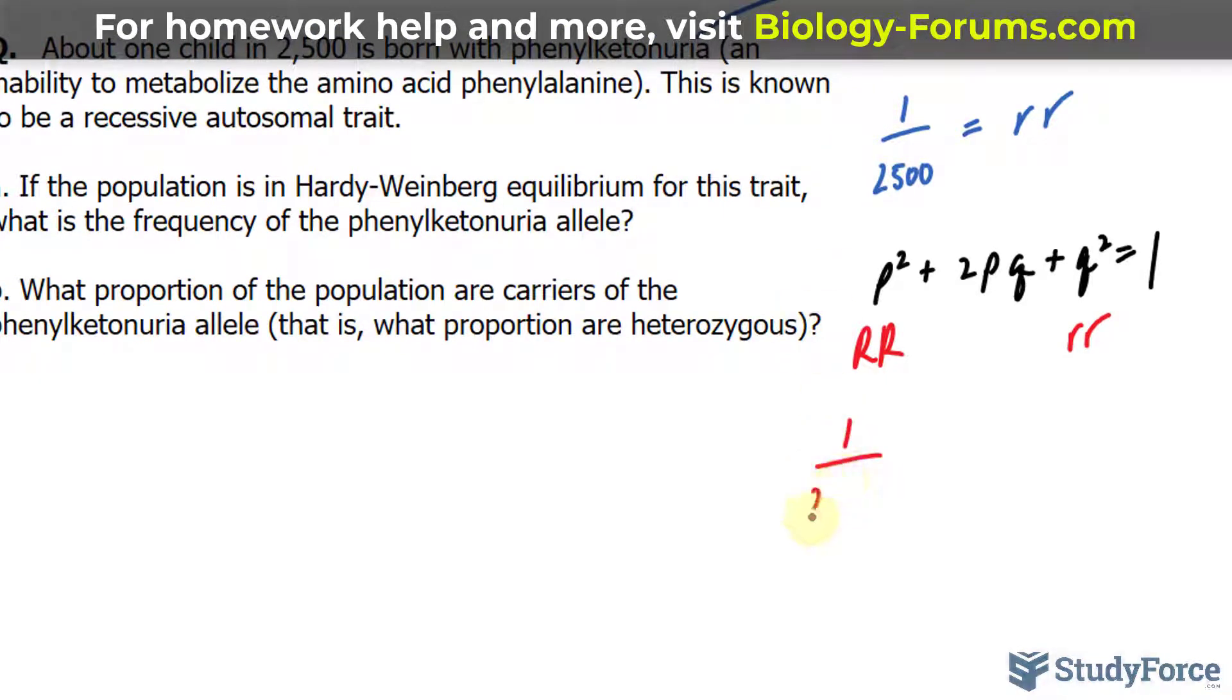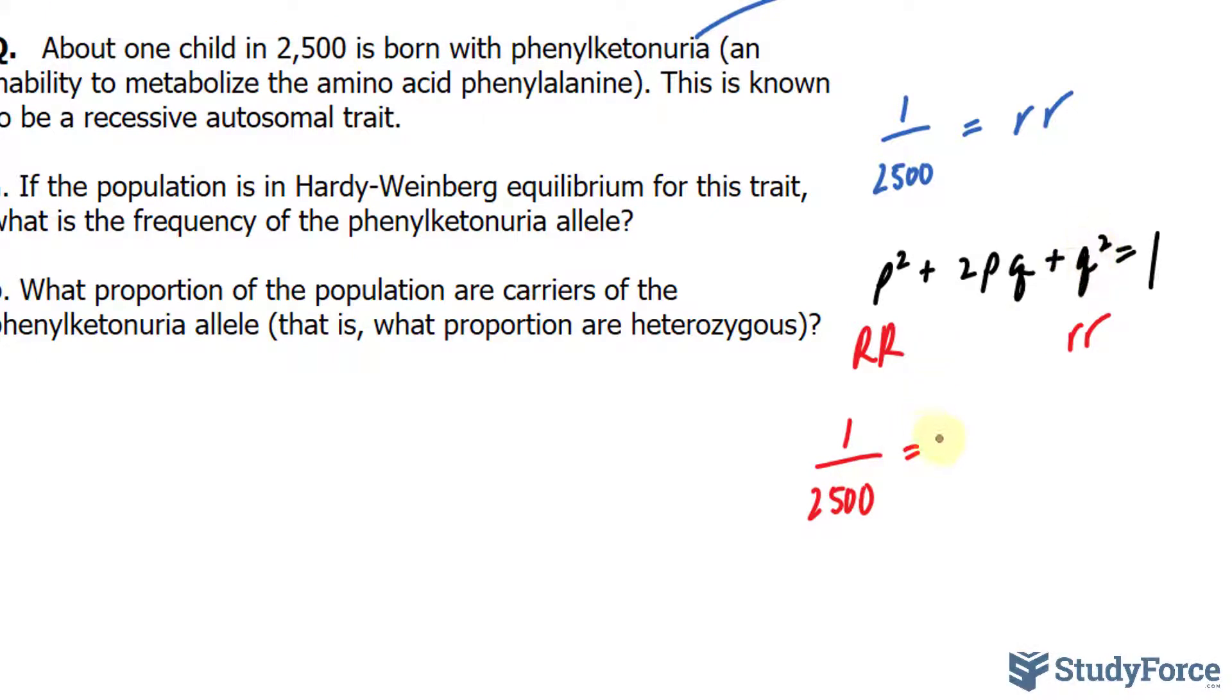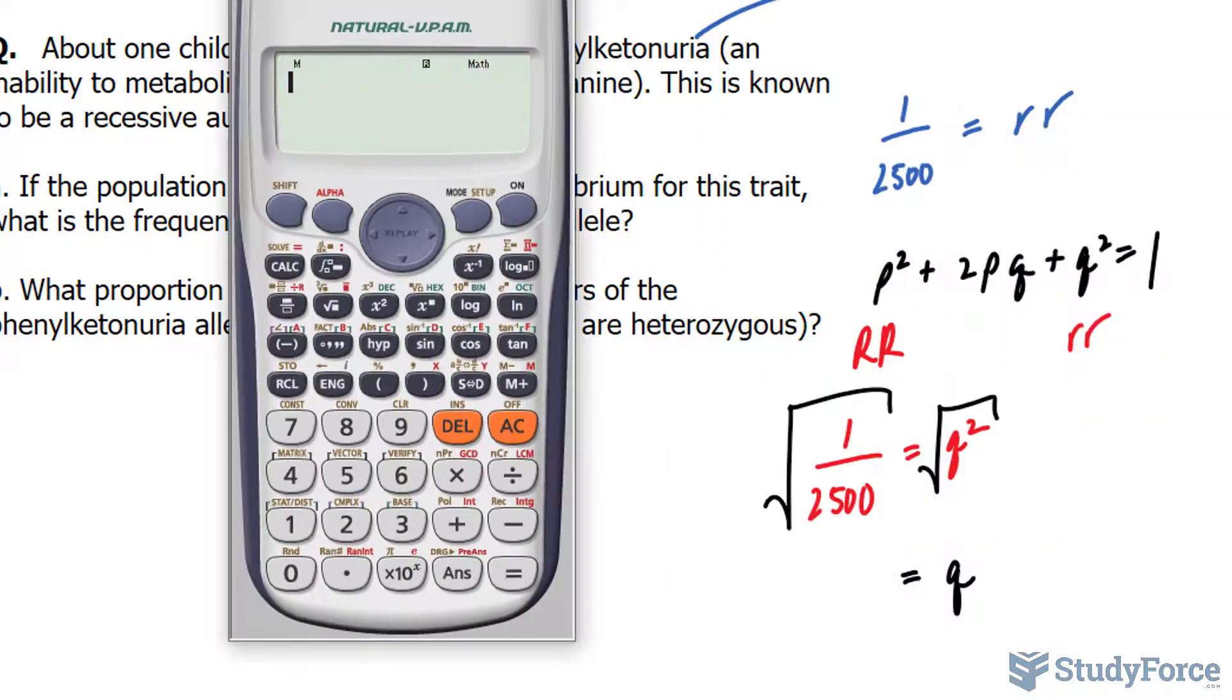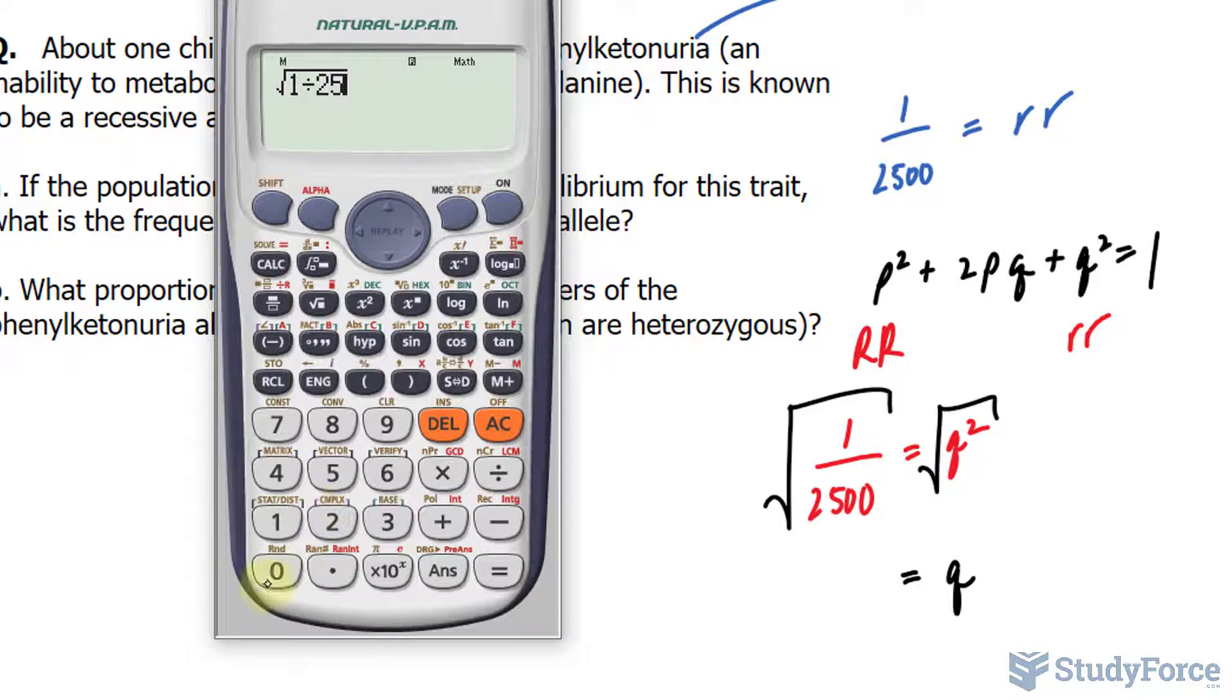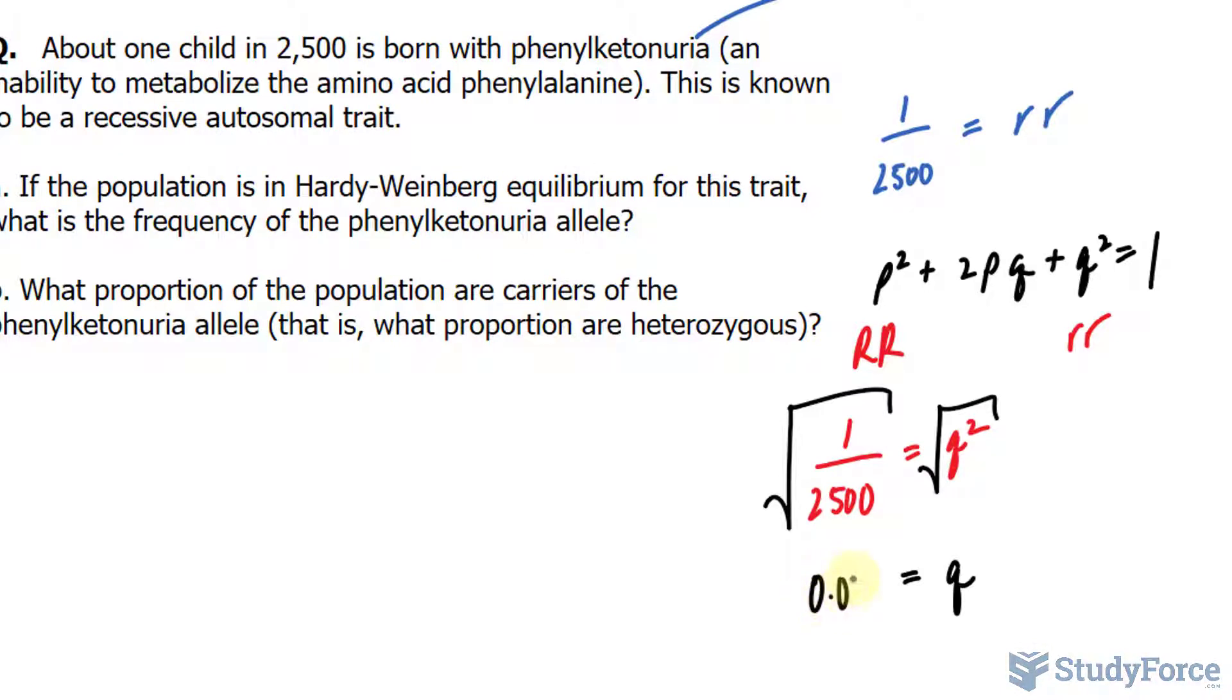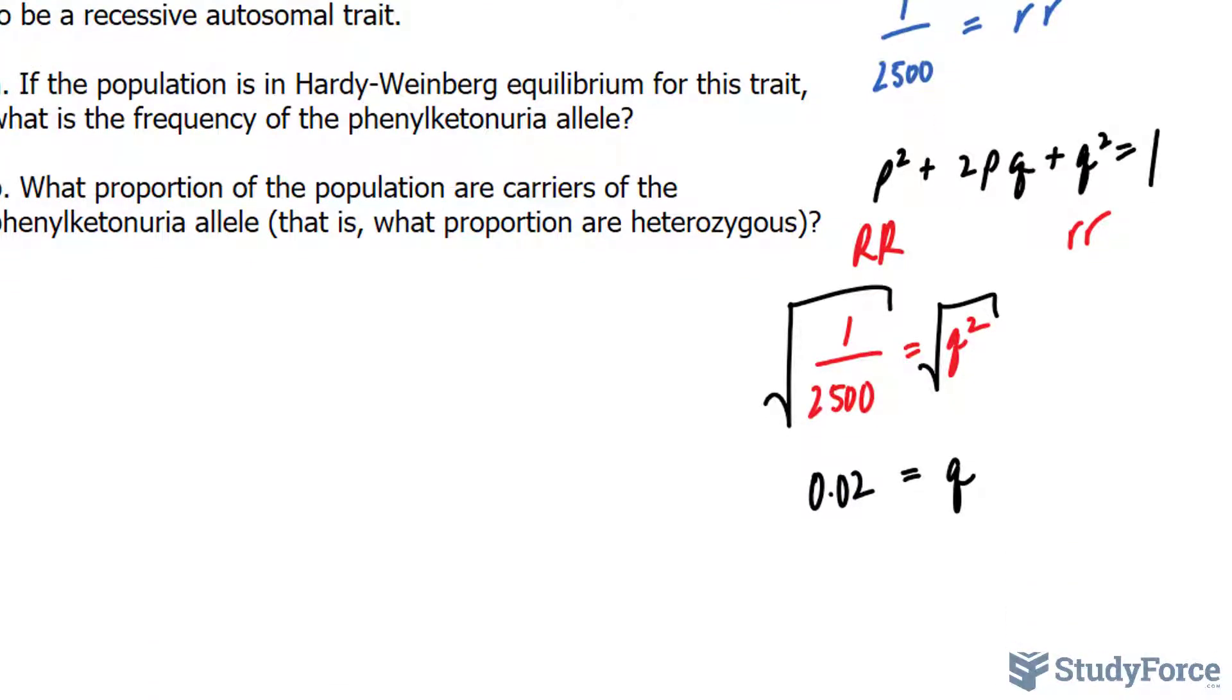So I'll take this 1 over 2500 and make it equal to q squared. By solving this equation, we'll have a number that represents q. And from that, we can find out the frequency of the recessive allele r. To solve for q, we will square root both sides of the equation, leaving us with q is equal to the square root of 1 over 2500, which makes 0.02. 0.02 is the allele frequency of the recessive allele. In other words, 2% of all alleles within the gene pool are recessive.